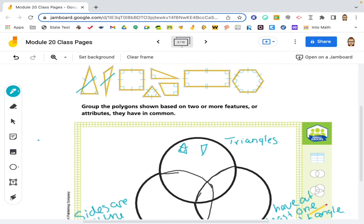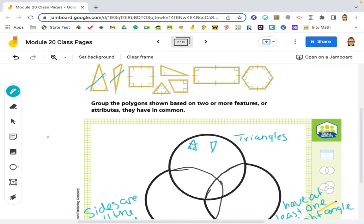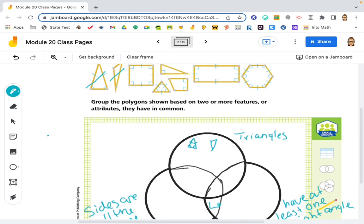Then our shape here, the square, has sides that are all the same length and has at least one right angle. So it's going to go here, or right angle. I don't know why I keep saying triangle.